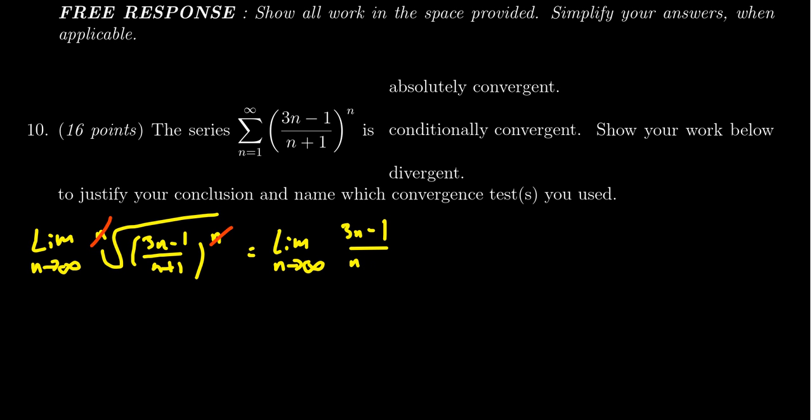This is a ratio, a balanced ratio. The leading term on top is 3n, the leading term on the bottom is n. So this thing is going to converge off towards 3.